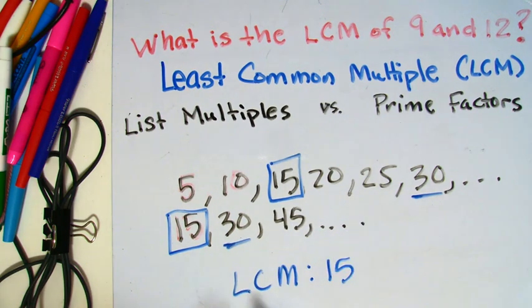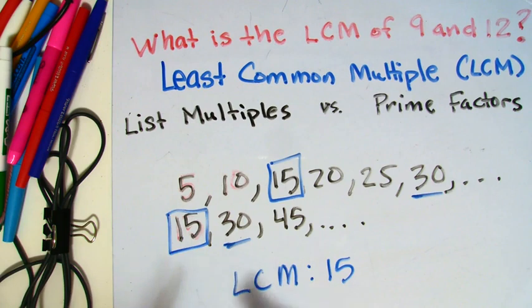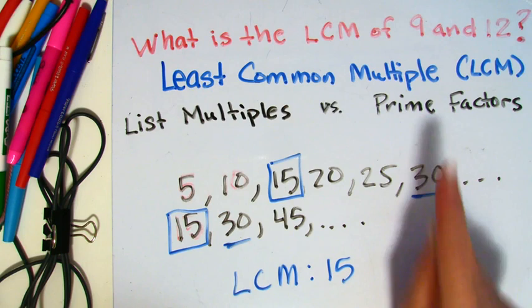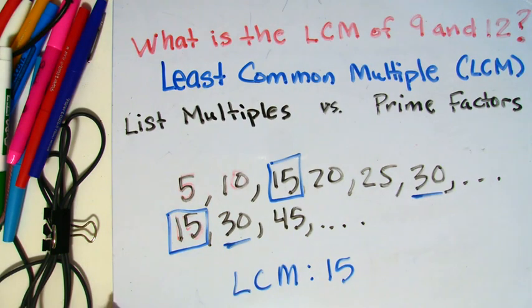Now, in this case, I demonstrated how to find the lowest common multiple by creating a list for each number. And we could do this for other numbers. You can even have three numbers that you're comparing. But let's go ahead and look at one other one, and then we'll look at our prime factors method for finding the lowest common multiple.